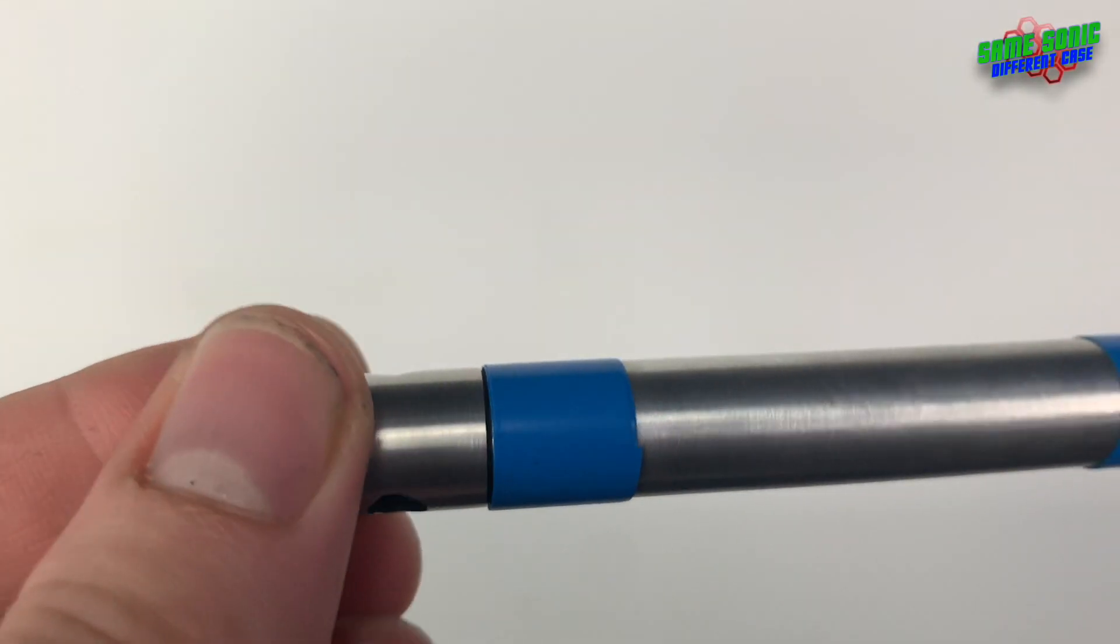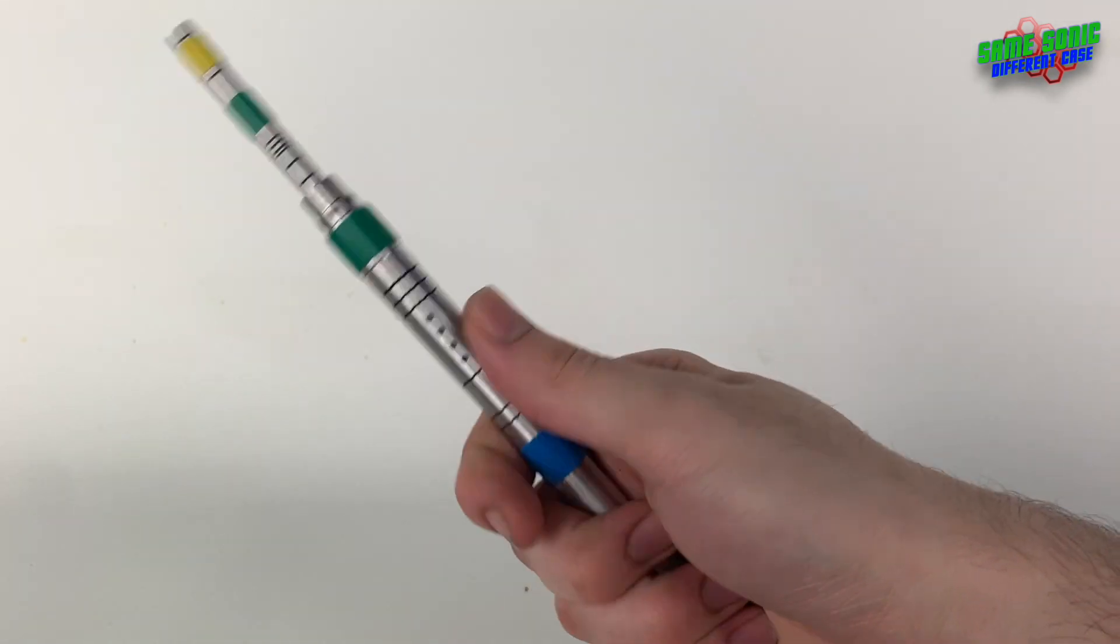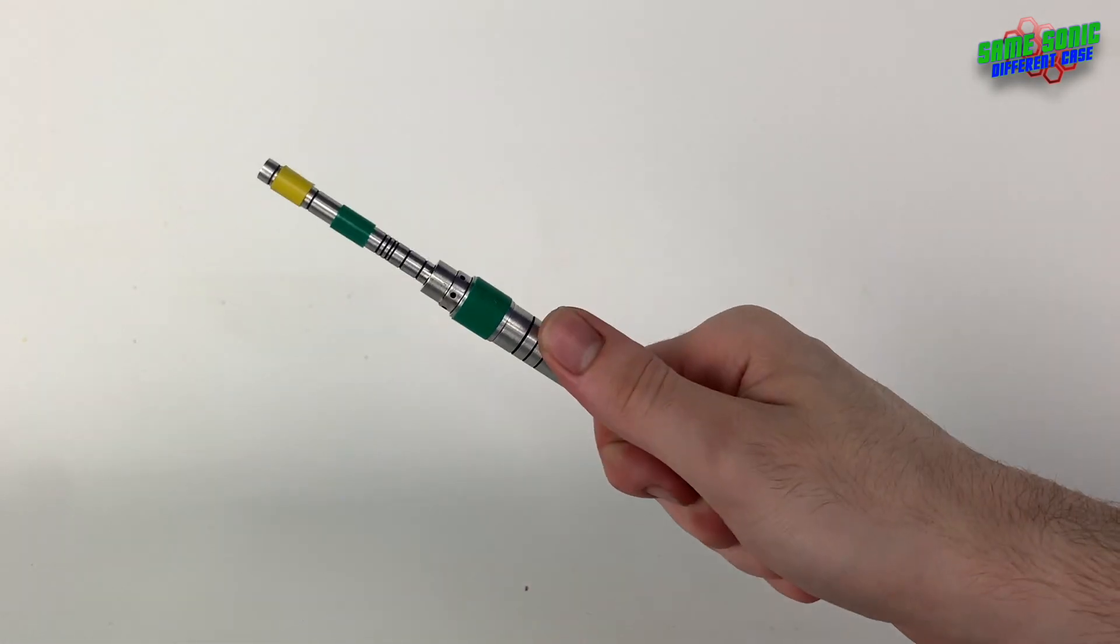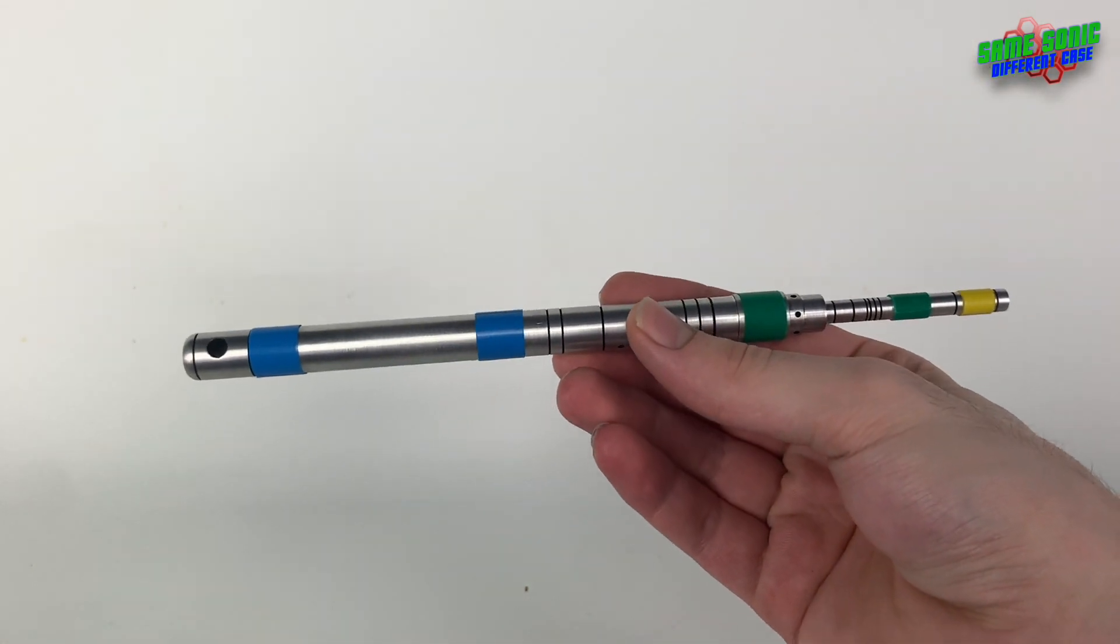And yeah, more tape on the handle there with a nice hole right there for, I don't know, if you want to put it on a keyring or something. But yeah it's really nice. It's probably the most accurate you can get to the prop.